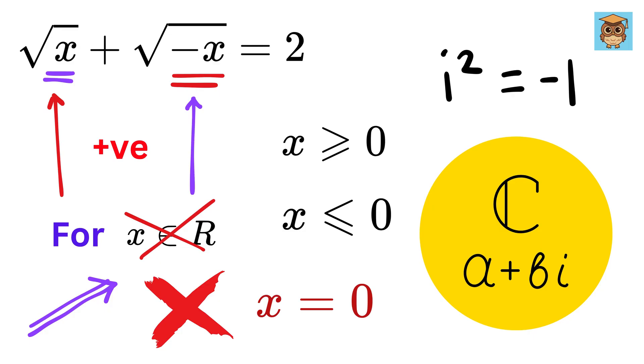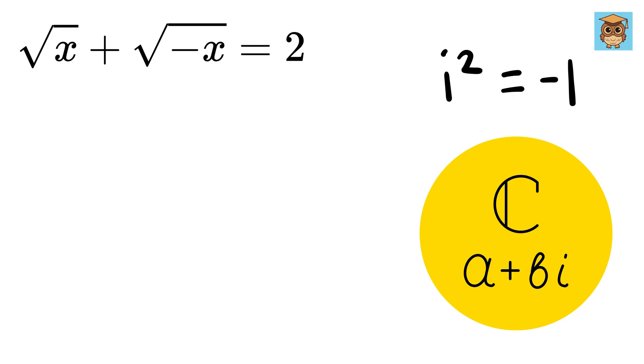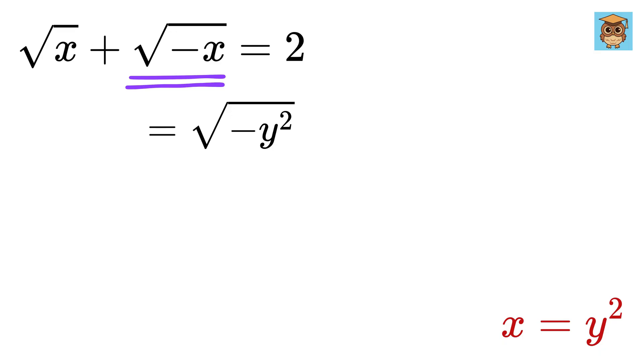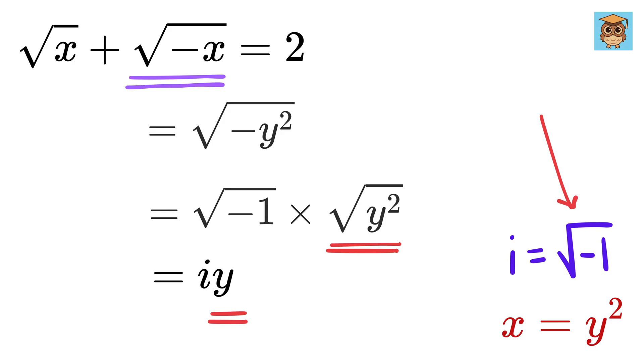And this is how you can solve for x in the complex world. Let us call this root of x as y, or x equals y square. So root of negative x equals the root of negative y square, or root of negative 1 times y square. This will give i times y, where we know that i equals root minus 1.